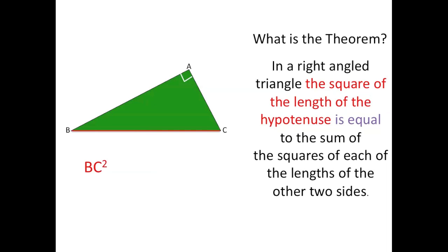BC squared is equal to something. The next part says 'to the sum of,' which basically means that we're adding something. So BC squared is equal to something that's being added. Now the last part of the theorem states the square of each of the lengths of the other two sides.